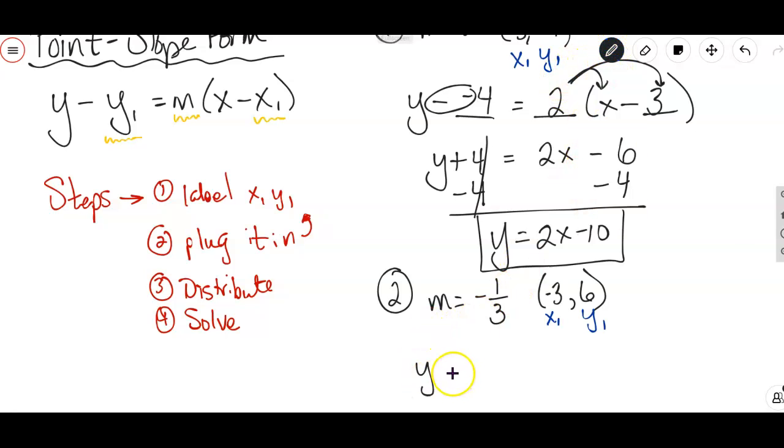And again, you don't have to write the blanks. I'm just writing the blanks so that we know those are the things we have to fill in. The blanks are the underlines. The first blank is supposed to be y₁, which is 6. The second blank is supposed to be the m, which is -1/3. And then the last blank is supposed to be x₁, which is -3.